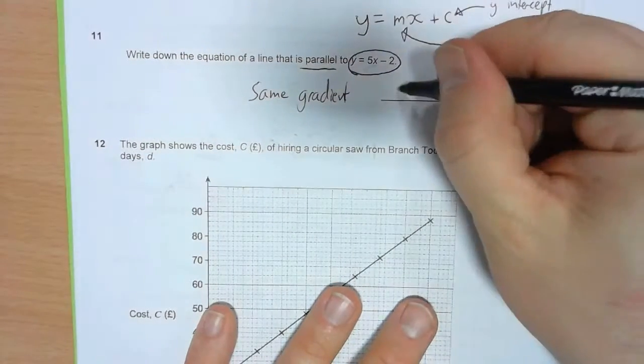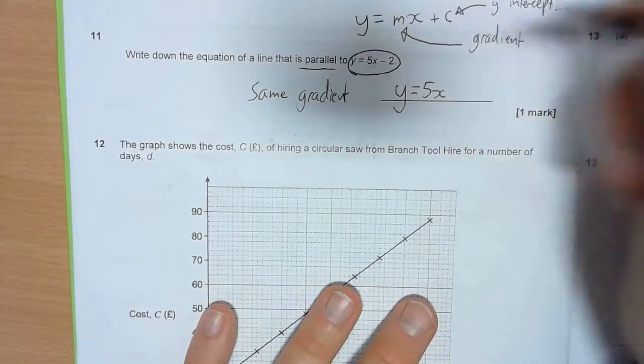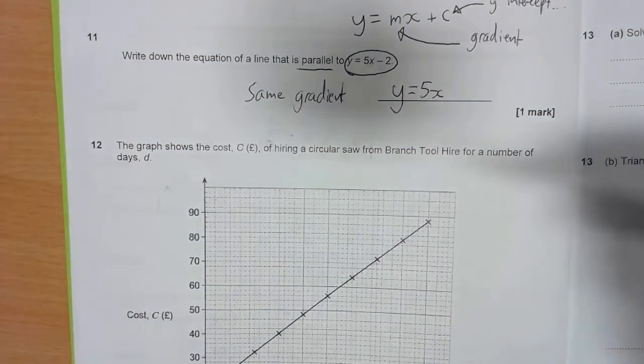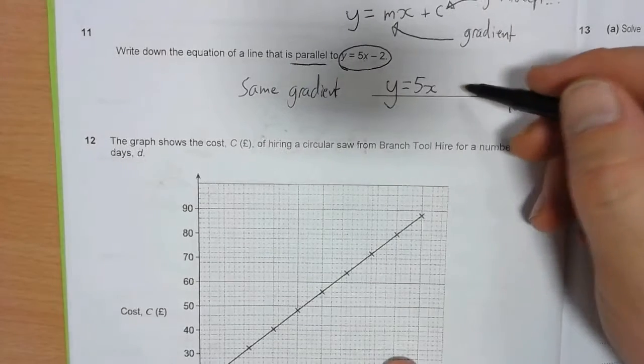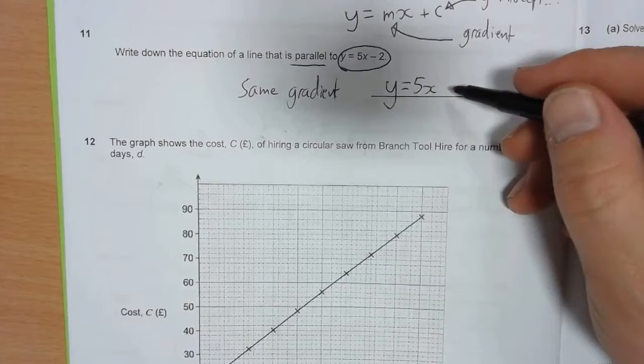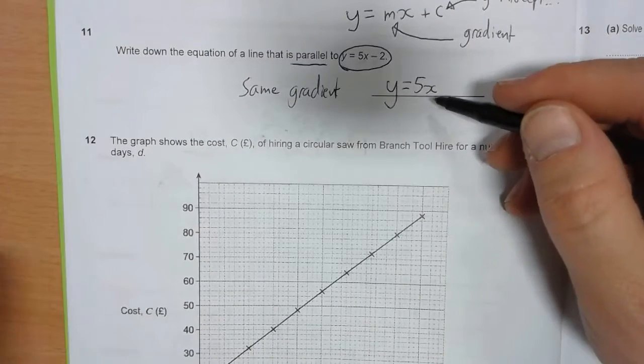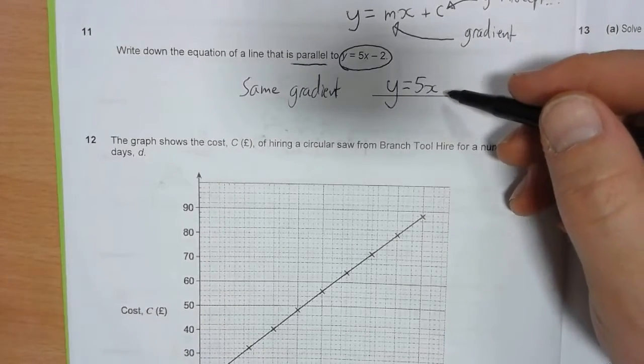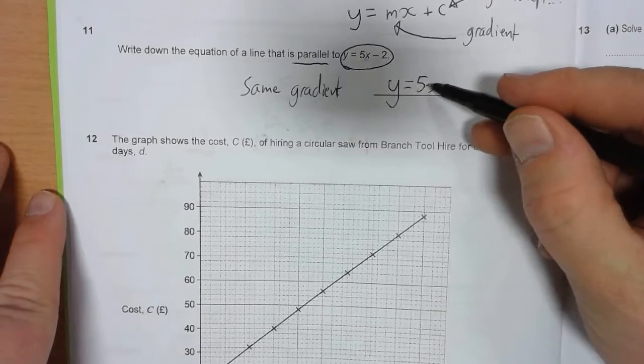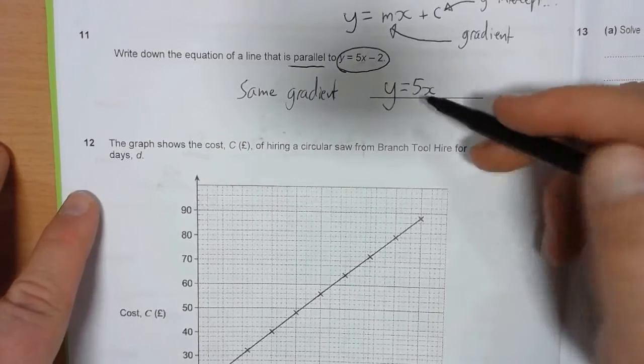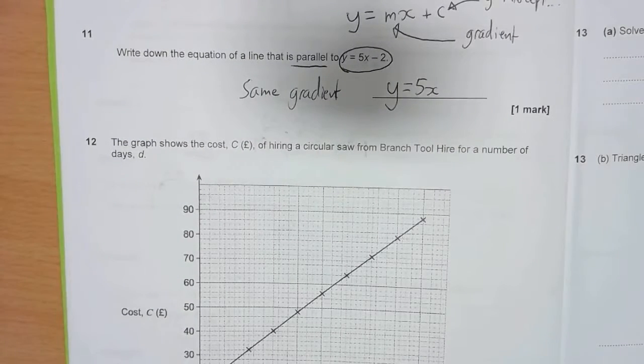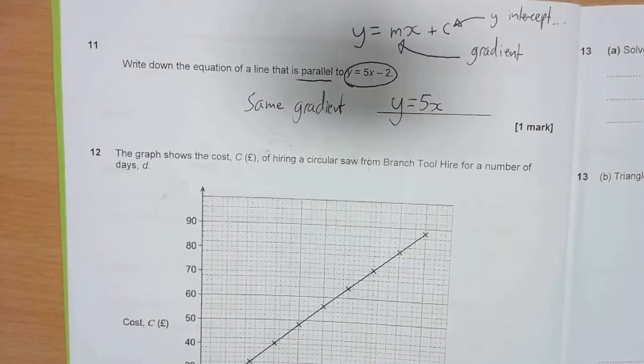So all I want is y equals 5x. So that means it now has the same gradient, so it's parallel. And then this bit could be anything. It could be plus 2, it could be plus a million, it could be minus 17, it could be plus 4, it could be just y equals 5x, which is the same as plus 0. It could be anything here. As long as we've got y equals 5x, then my gradient is the same on both. So here, the gradient is the same on both.